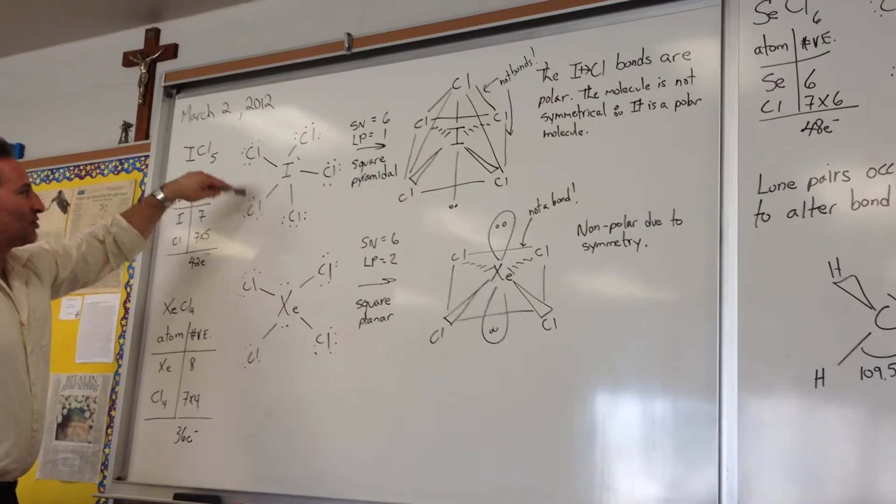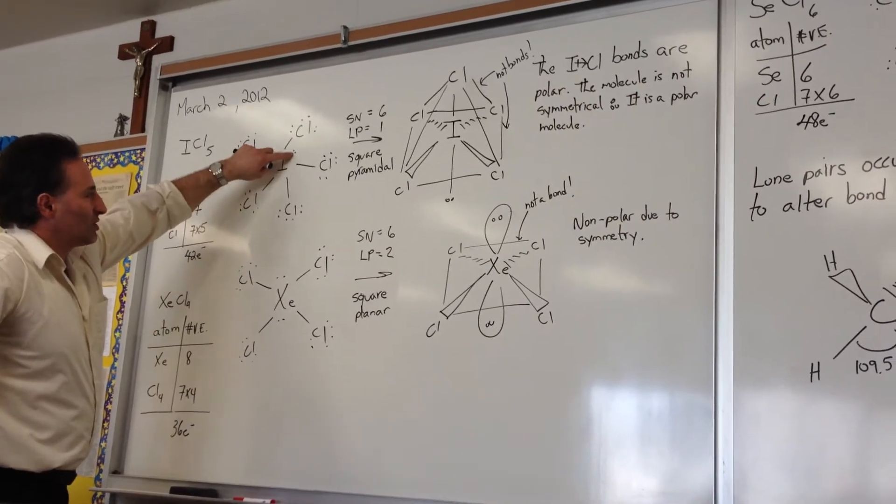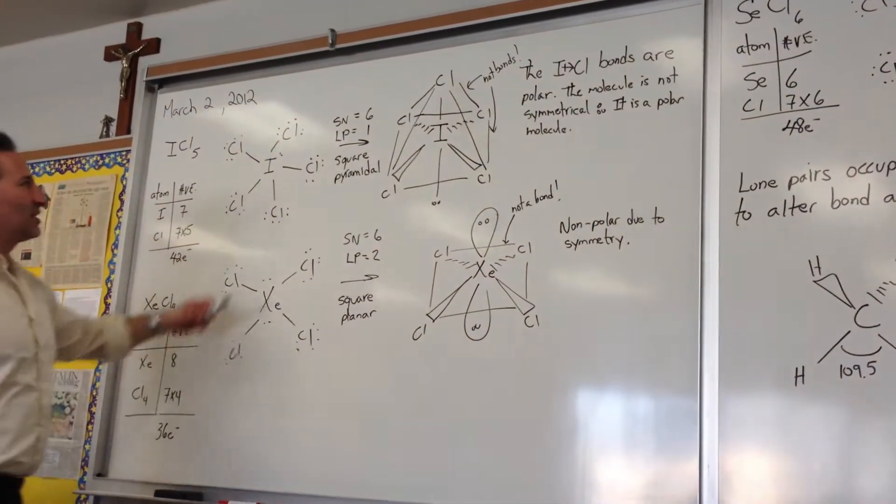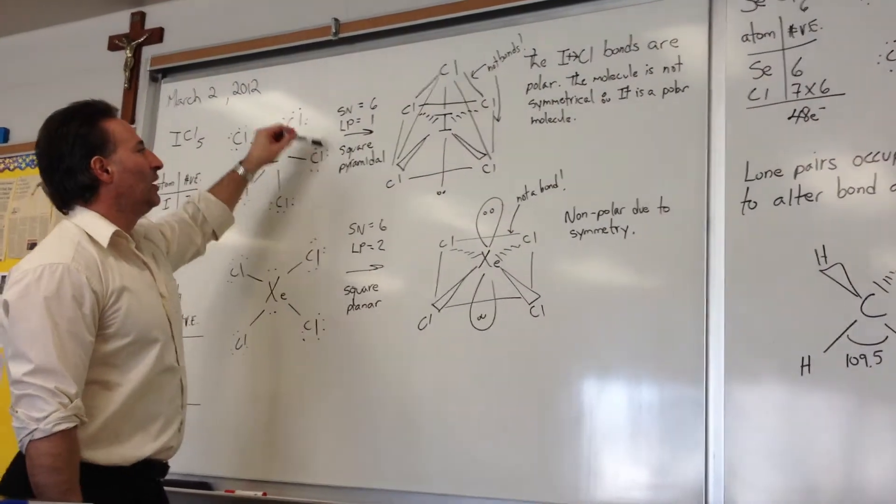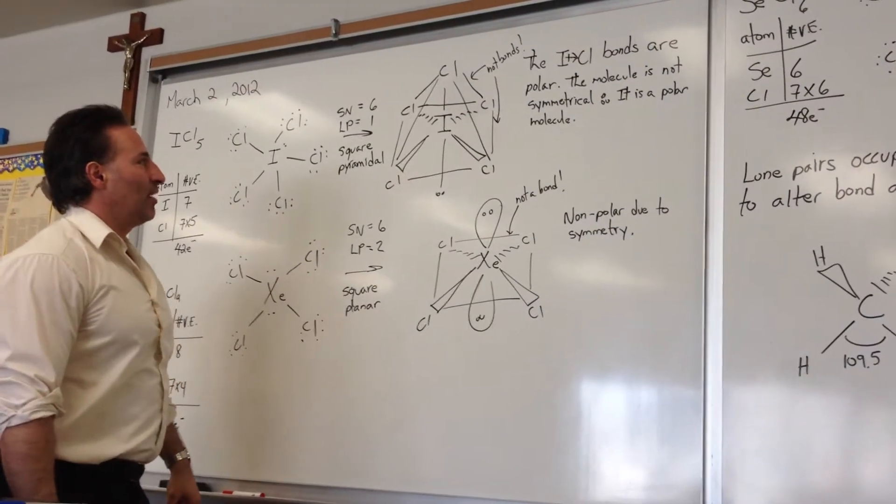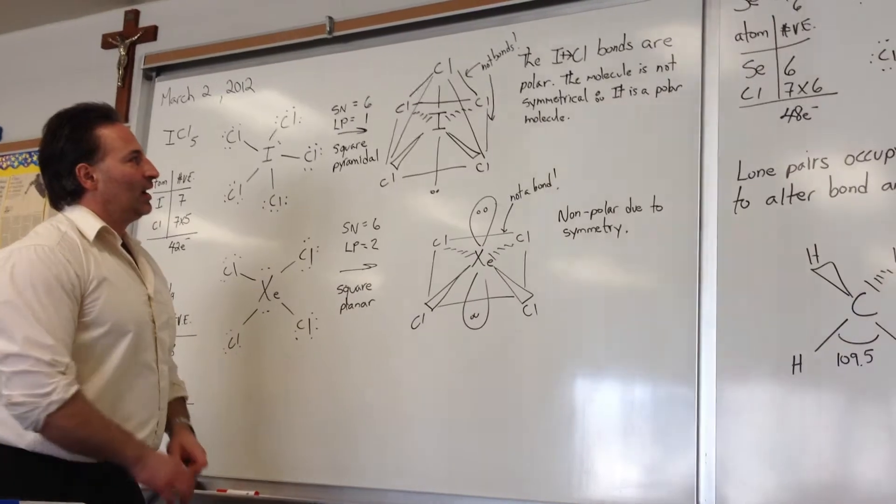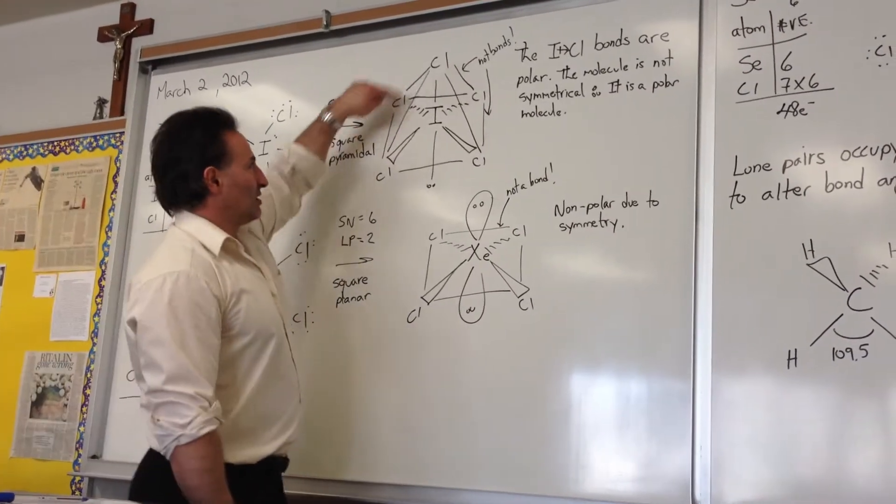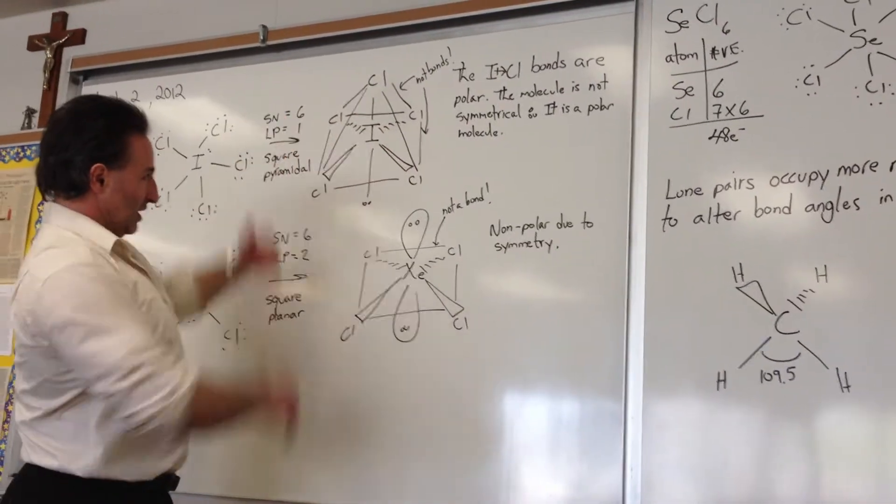We draw a preliminary Lewis structure. We notice that there's a lone pair on the iodine, the central atom. So there's a steric number of 6 with one lone pair, and that points to a square pyramidal geometry. Now I've drawn it in perspective with these lines here to show how it looks like a square-based pyramid.